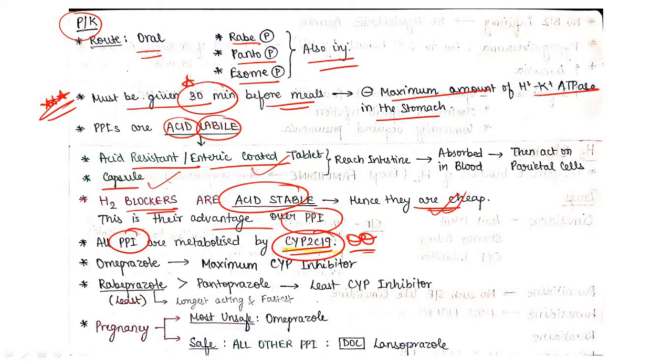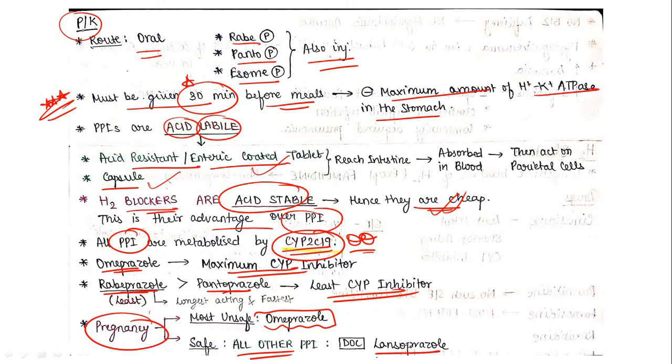I have discussed omeprazole interaction with clopidogrel and warfarin in general video. Omeprazole is maximum CYP inhibitor, then rabeprazole and pantoprazole are the least CYP inhibitor drugs. In pregnancy, most unsafe is your omeprazole, and safe are all other PPIs. When we talk about the drug of choice in case of pregnancy, then it will be lansoprazole - means lansoprazole is safest in pregnancy.